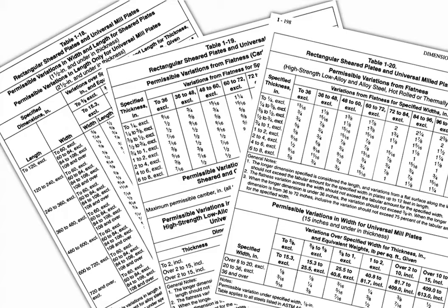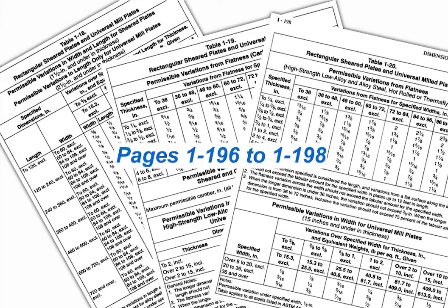Permissible variations for plates and bars are discussed in Table 1-18 through Table 1-20 on pages 1-196 through 1-198 in your LRFD manual.